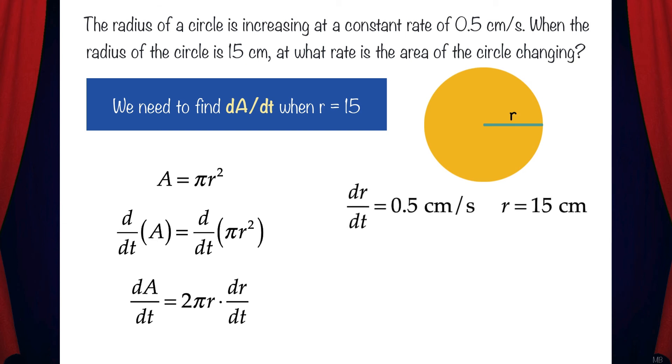We know dr/dt equals 0.5 centimeters per second, and we want to find dA/dt when r equals 15. So we can plug in these values. dA/dt equals 2π times 15 centimeters times 0.5 centimeters per second. We can simplify this, and we get dA/dt equals 15π centimeters squared per second.